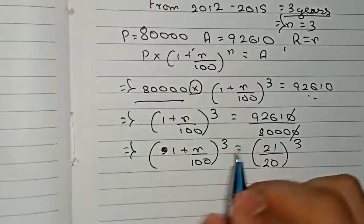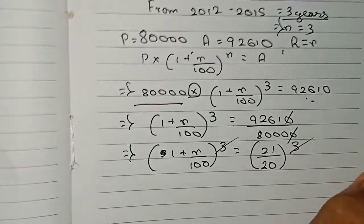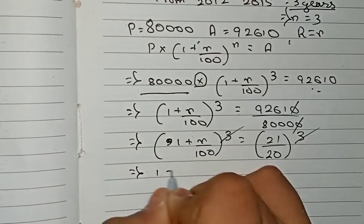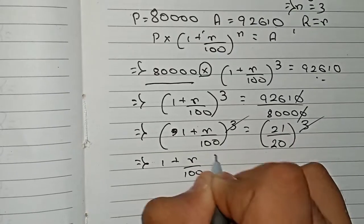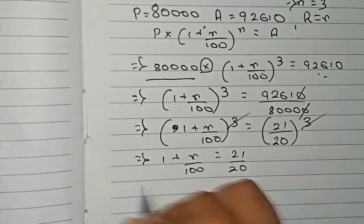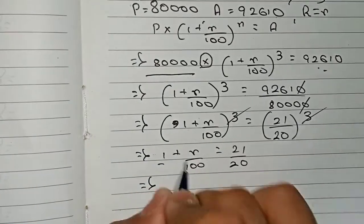So now easily you can cut the cubes, so now only remains 1 + r/100 equals 21/20. So now I take this 1 to this side. As it is in addition here, it will go for subtraction here.